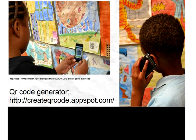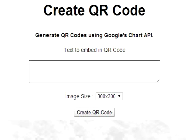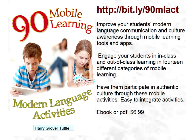For creating QR codes, the program I prefer is createqrcode.fspot.com. Basically they go to the page, type in the web address, select the size, click the code, and they instantly have it. Students can even create their own QR codes for things.